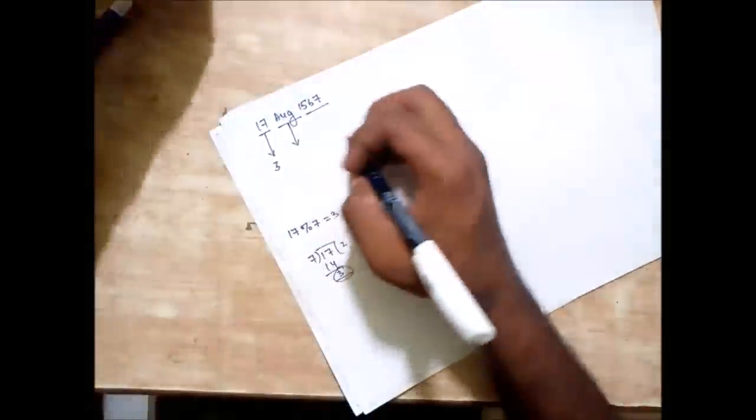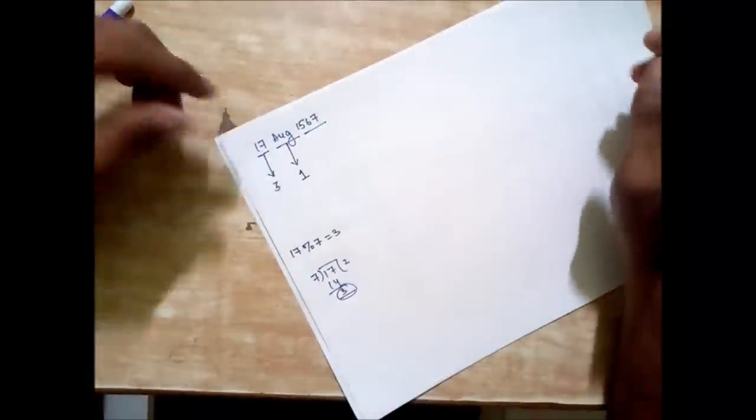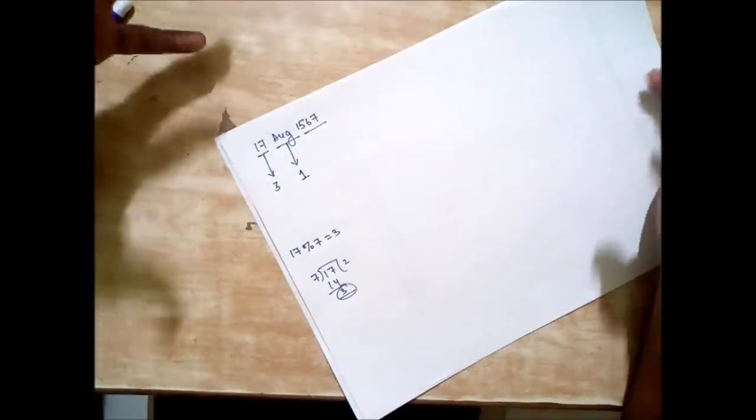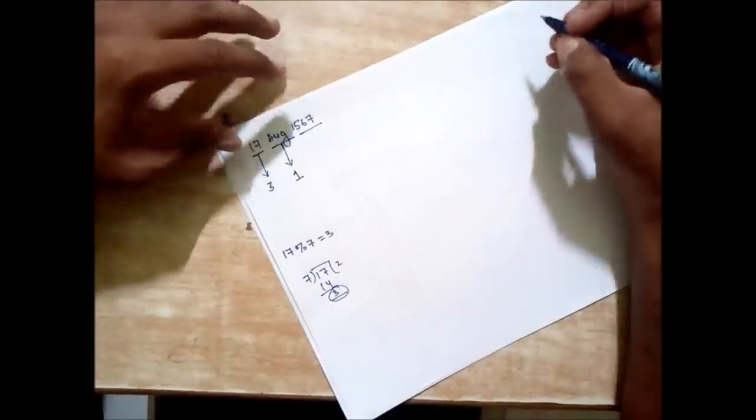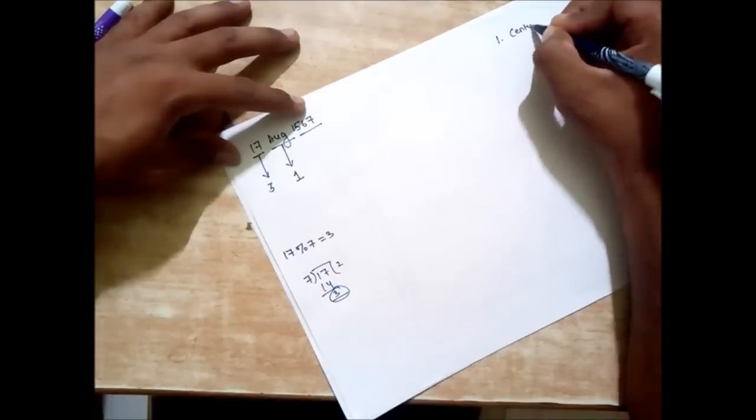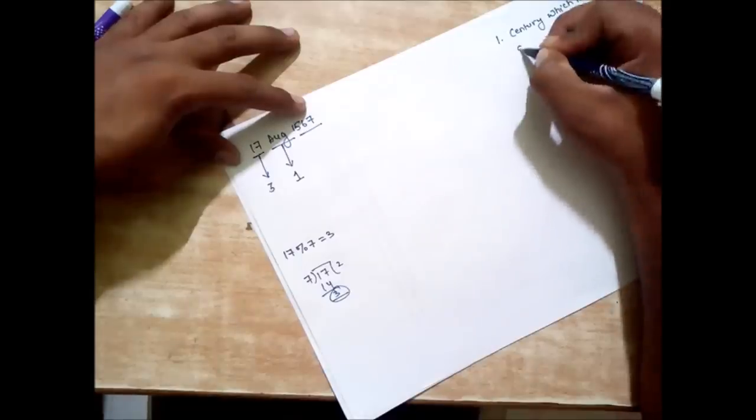So we have August which is equal to 1, so we write 1. Now we come to year. Here is the most complex part of solving this solution.